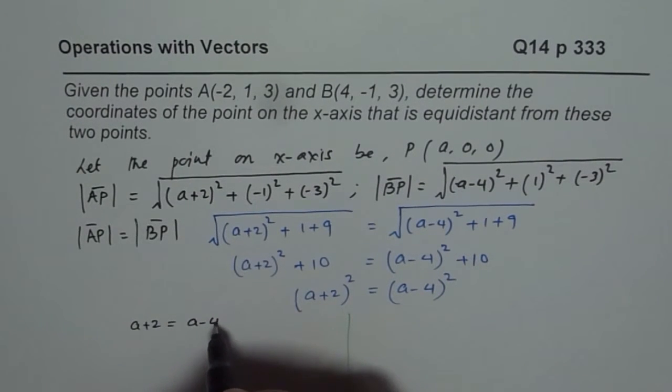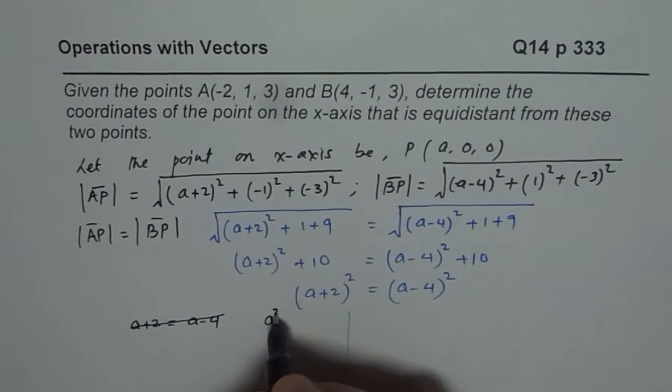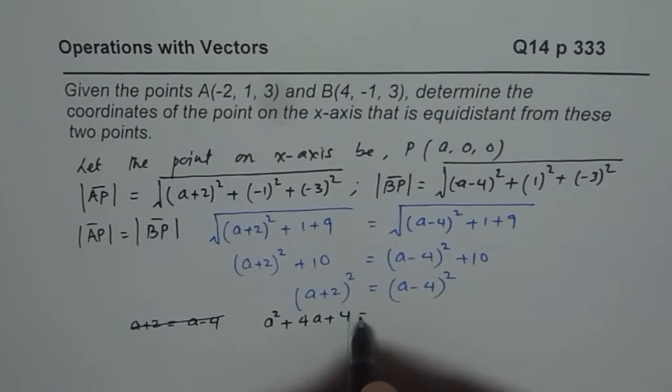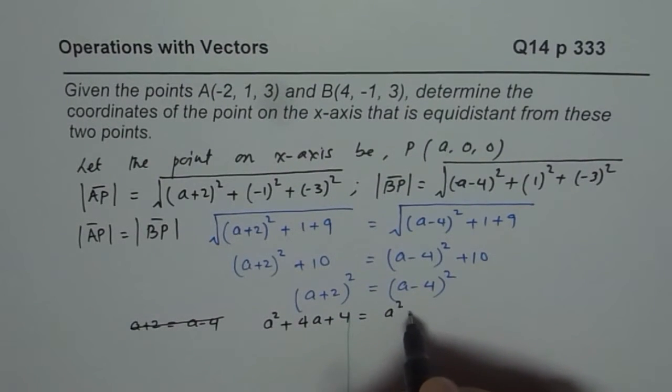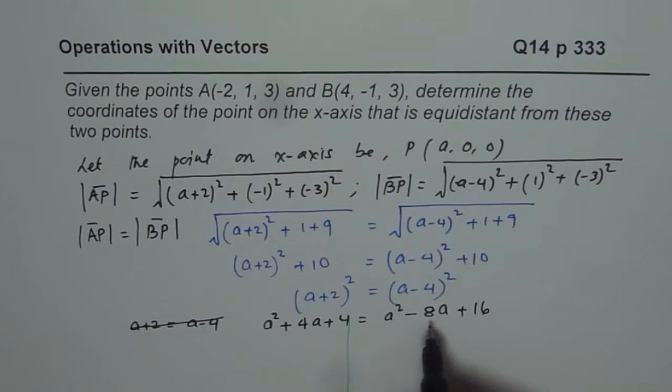When you expand this, you get a² plus 2ab, which is 4a plus 4, equals to a² minus 2ab, which is 8a plus 4², which is 16.